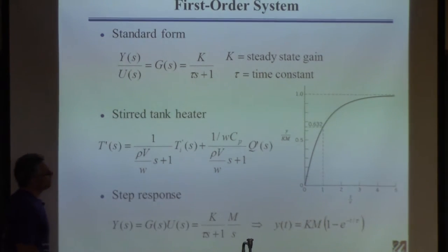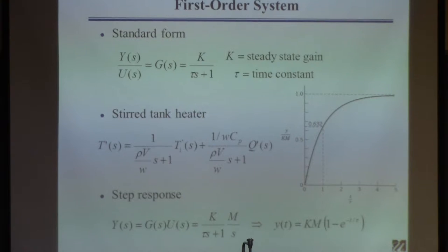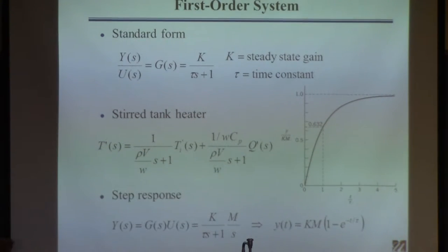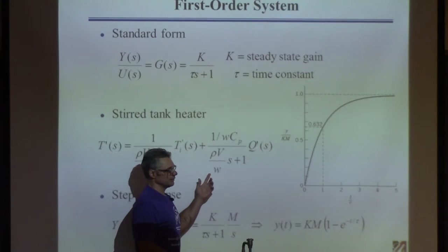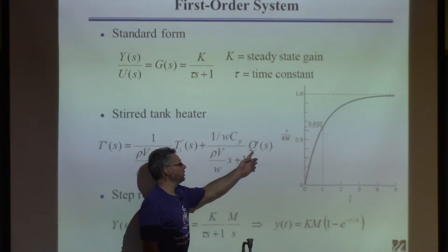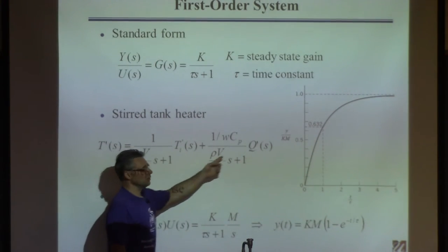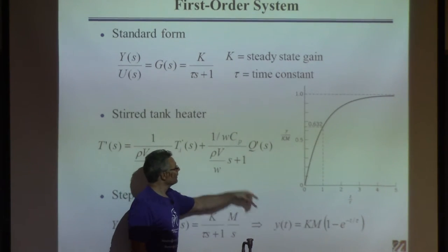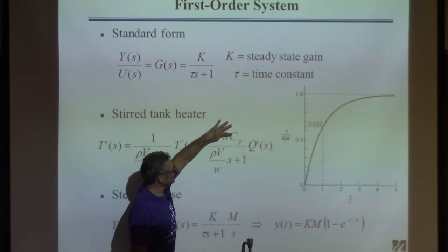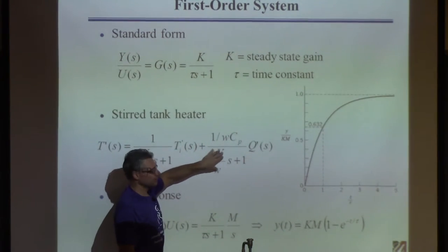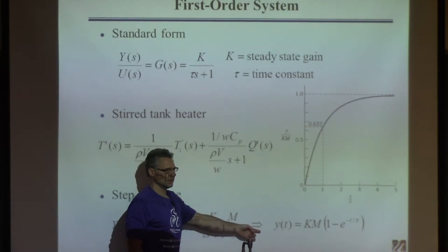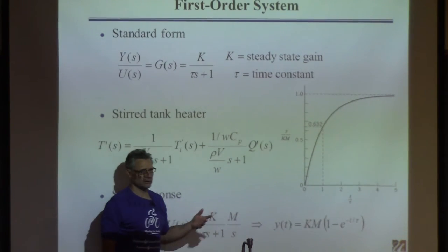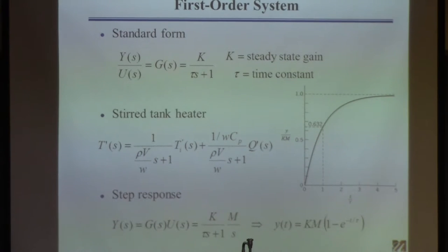That's the generic response of a first-order system to a step change. If you had the stirred tank problem and wondered what the temperature response is to Q, you'd say it's that general form — with K and tau for your specific problem, plus the magnitude M of the step change. You don't have to re-derive it; it's already done.